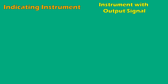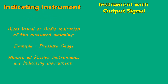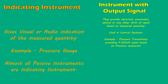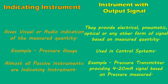Indicating Instruments and Instruments with Output Signal. Indicating instruments are those which give a visual or audio indication of the measured quantity. An example is a pressure gauge. Almost all passive instruments are examples of indicating instruments. Instruments with signal output are those which provide an electrical, pneumatic, optical, or any other type of signal based on the measured quantity. These instruments are used in control systems. An example is a pressure transmitter which provides a 4-20 mA signal based on the pressure measured.